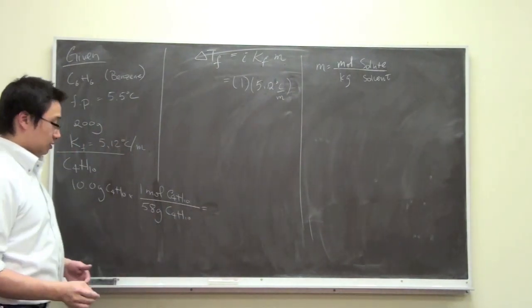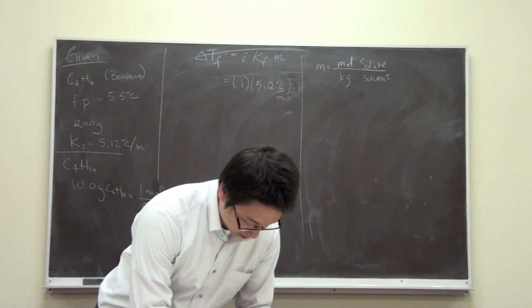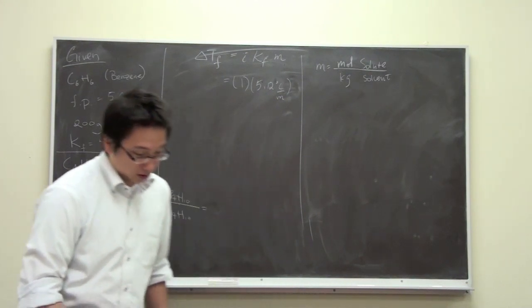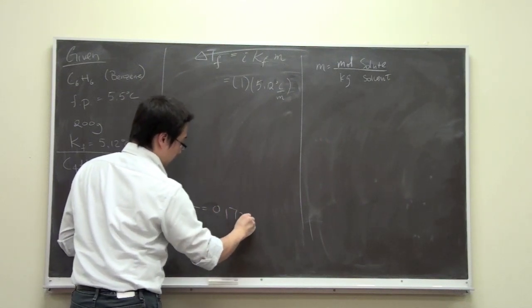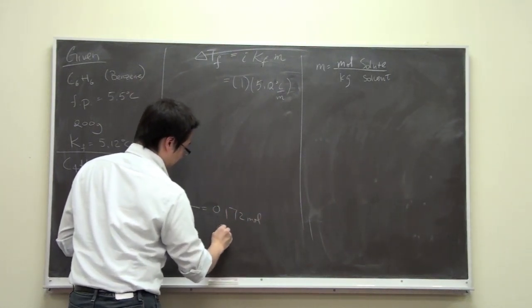And that is 10 divided by 58, which equals 0.172 moles of butane.